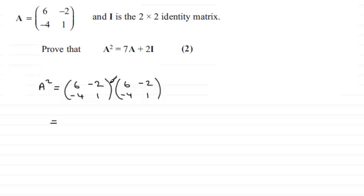We do row by columns. For the first element here, it will be 6×6 = 36. Then we add -2 × -4, which is 8. 36 + 8 gives us 44.